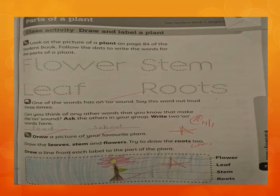The activity is: draw and label a plant. Look at the picture of a plant on page 84 of your student book. You have done this page in your student book, so you should know how to label the parts of the plant. Follow the dots to write the words for the parts of a plant.